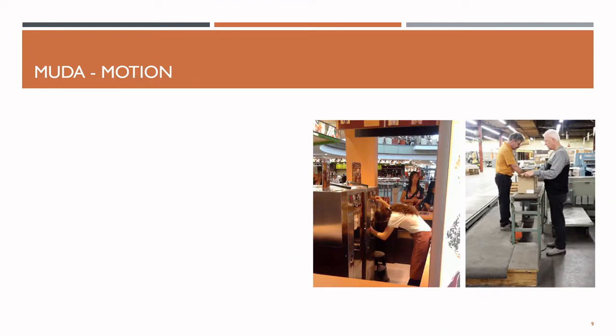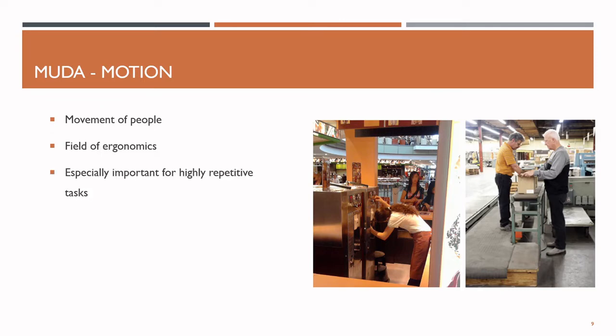Our next muda is motion. This one is similar to the transportation waste, but instead of movement of materials, it's about movement of people – in other words, we are in the field of ergonomics. This type of waste is especially relevant for highly repetitive tasks, because the improvements we typically make in range of movement are rather small at one repetition, but they multiply with hundreds or thousands of repetitions. A reduction of necessary movement of a worker by only a few centimeters can already save a lot of time and money.